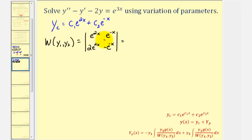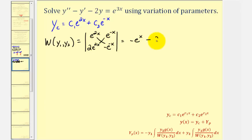So we'll have this product minus this product. When multiplying, the bases are the same so we add the exponents. The first product would be negative e to the power of x, and then minus the second product, which would be two e to the power of x, giving us negative three e to the x for the Wronskian.